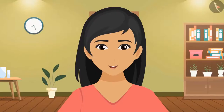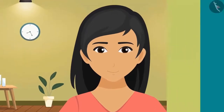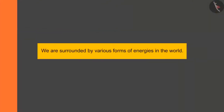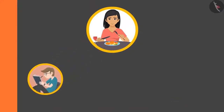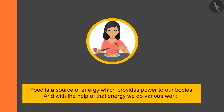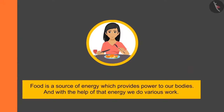It's all about energy. We are surrounded by various forms of energy in the world. Let's take another example: we eat food when we feel hungry, and after eating we feel fulfilled. This food helps us in doing different work like studying, playing, and walking. Food is a source of energy which provides power to our bodies, and with the help of that energy we do various work.